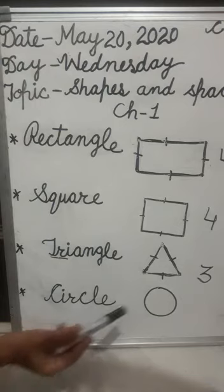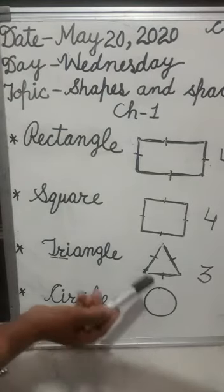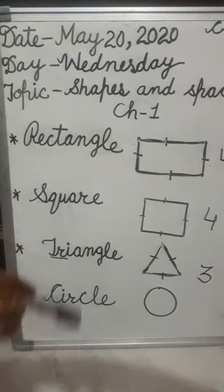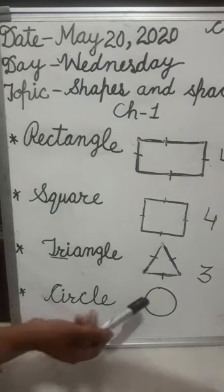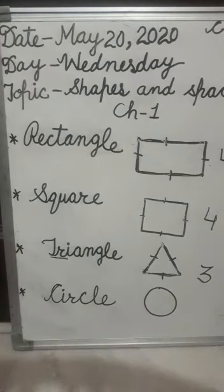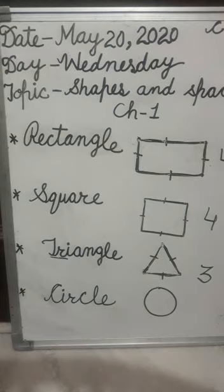Circle. This is circle shape. It has no side and no corners — circle का ना तो कोई side होती है, ना ही कोई corner होता है. Example of circle shape: mama's bangle, mama's bindiya, mama's chapati. आपने एक poem सुनी होगी — mama की रोटी गोल-गोल, पापा के पैसे गोल-गोल. तो mama की chapati कैसे होती है? गोल — गोल का मतलब circle. These all are examples of circle shape.